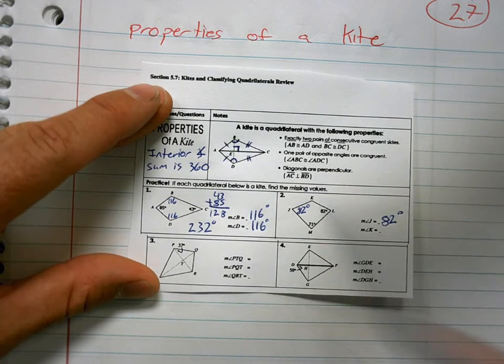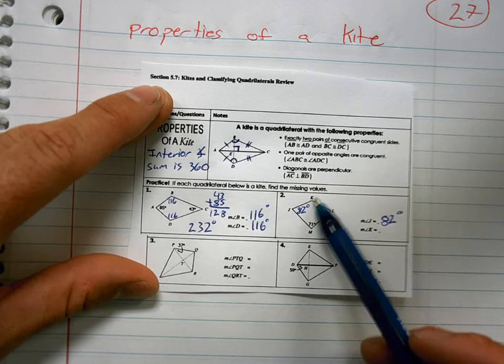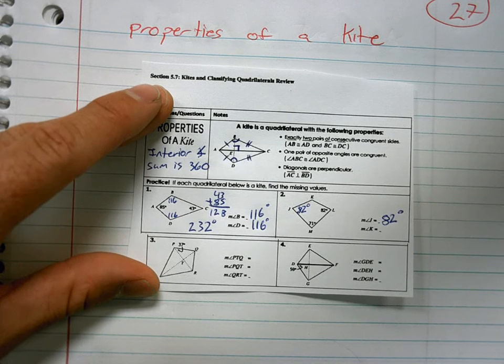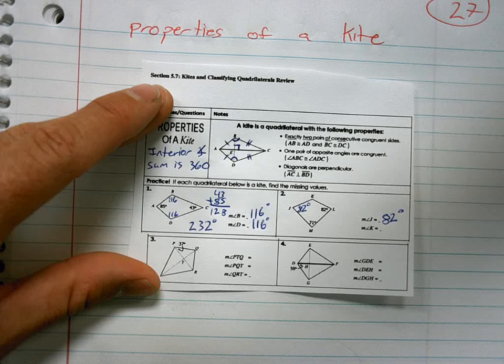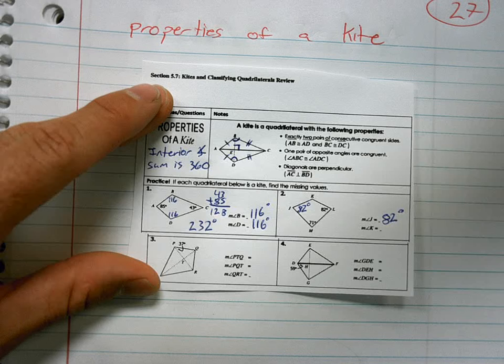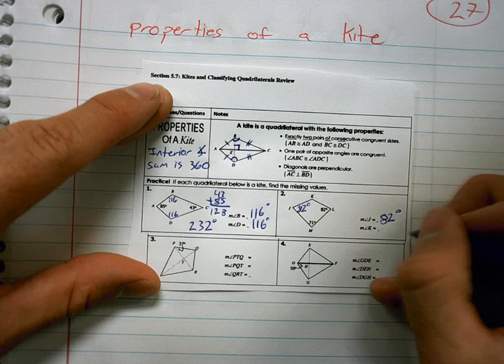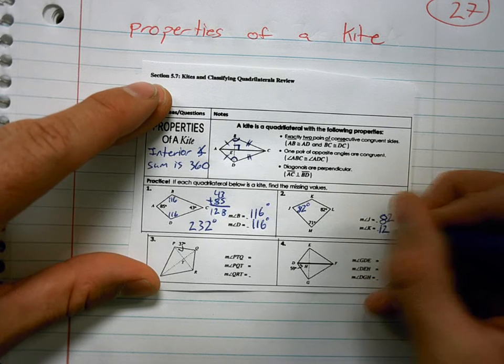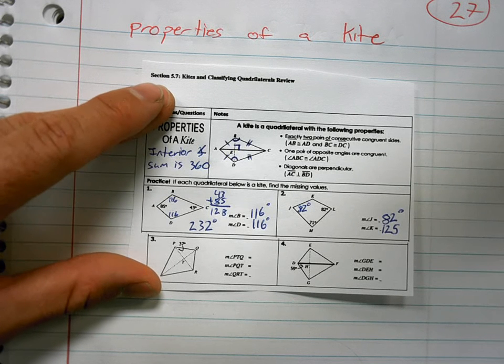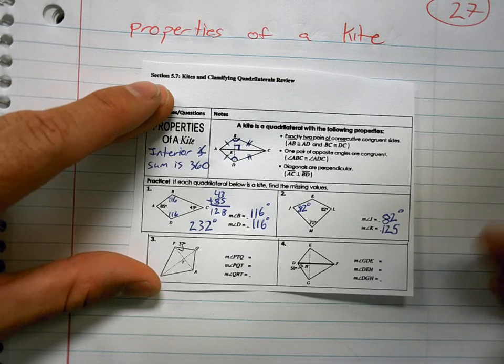I know three of the four angles. I can add these up, subtract from 360 to get the missing side. Okay. 125 degrees. Okay. Number three.